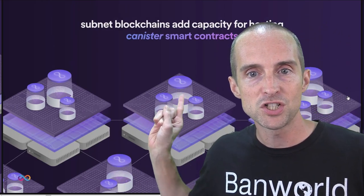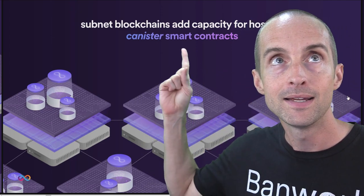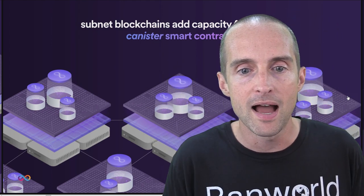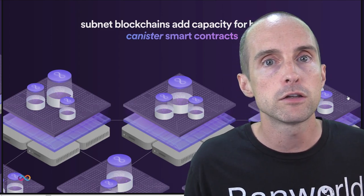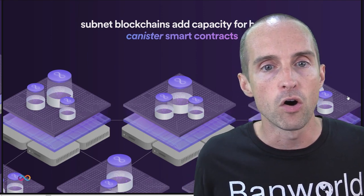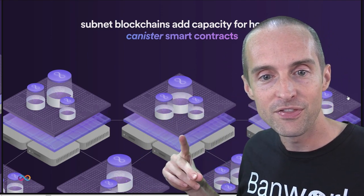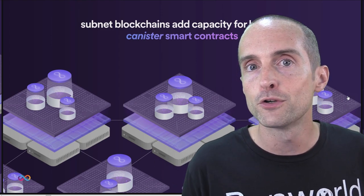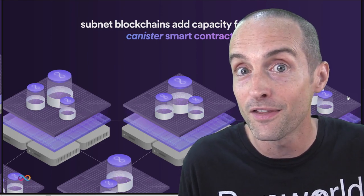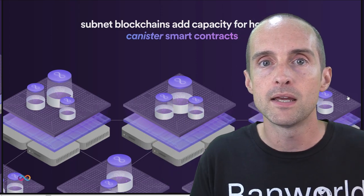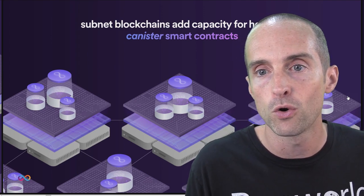The subnet blockchains add capacity for hosting canister smart contracts — and this is the real breakthrough of Internet Computer. Canister smart contracts allow you to put everything you need directly in a canister, including storing data, running computational power, and all the code and logic required. Internet Computer also eliminates the need for centralized oracles, because the canisters can pull data directly — you don't need a third-party oracle.